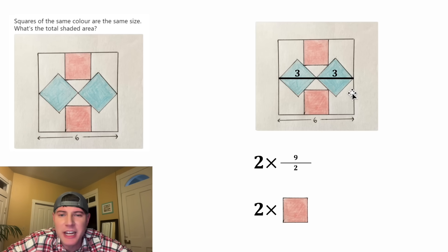So the blue squares each have an area of nine halves. And after we multiply that by two, we get nine. So these two blue squares have an area of nine.